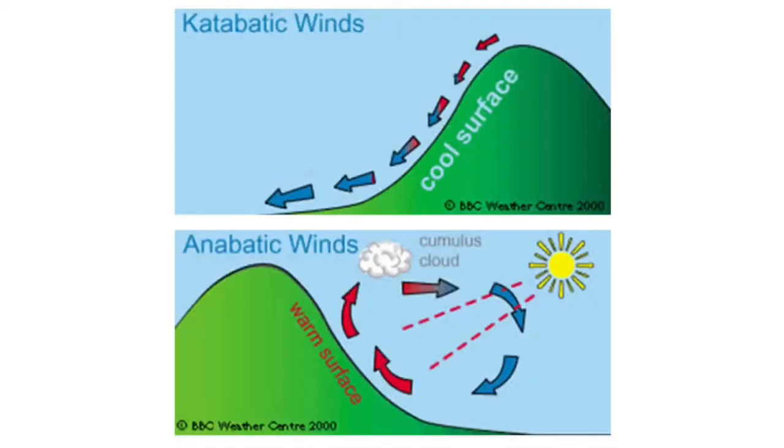Anabatic winds are upslope winds driven by warmer surface temperatures on a mountain slope than the surrounding air column.